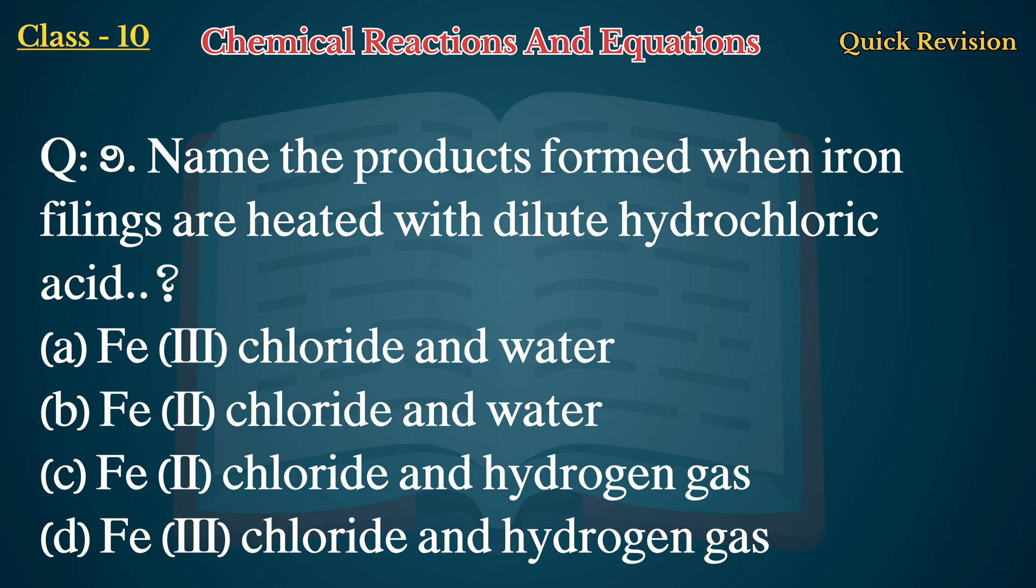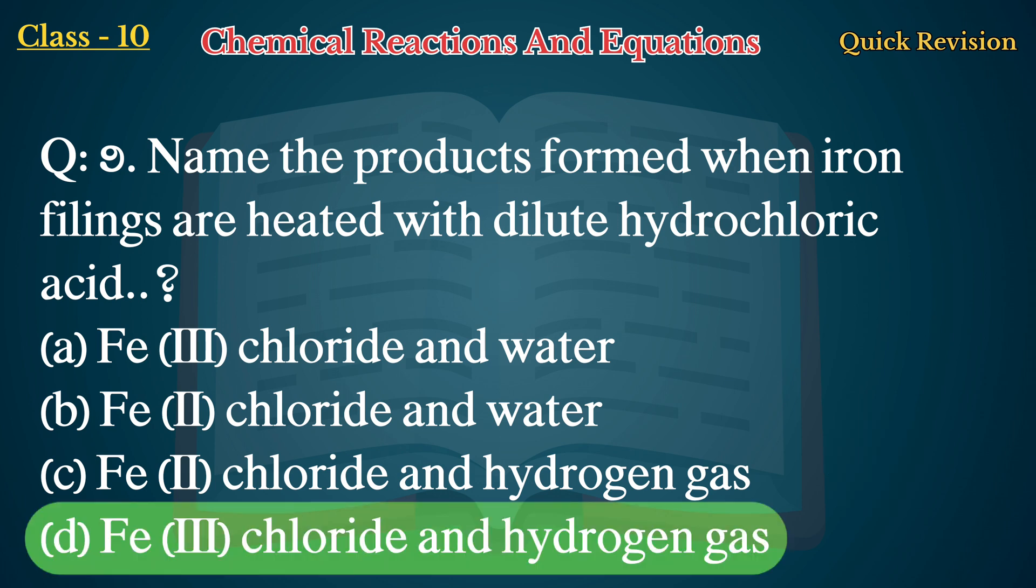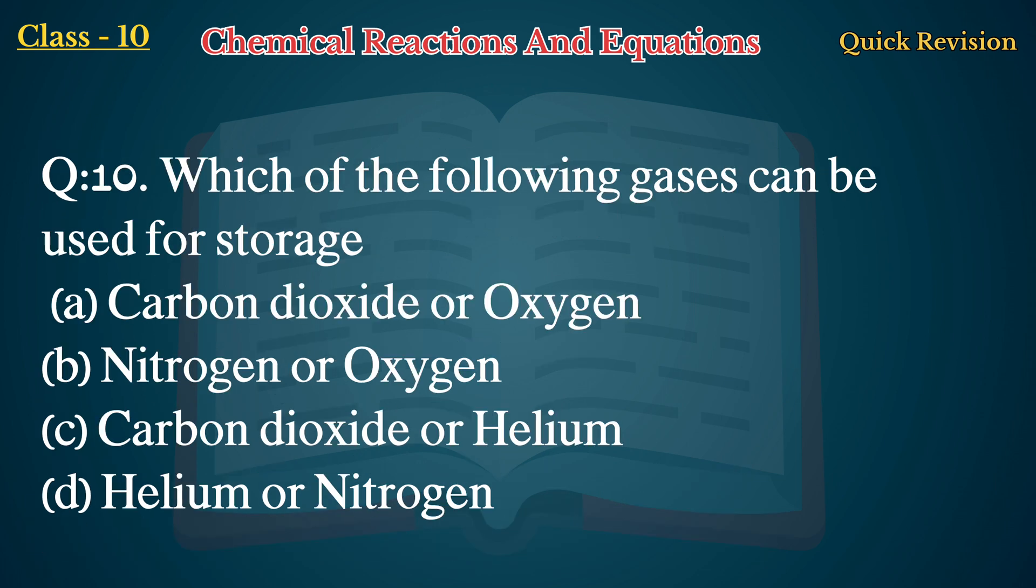Question No. 9: Name the products formed when iron filings are heated with dilute hydrochloric acid. A. Fe(III) chloride and water, B. Fe(II) chloride and water, C. Fe(II) chloride and hydrogen gas, D. Fe(III) chloride and hydrogen gas. Answer: D. Fe(III) chloride and hydrogen gas.